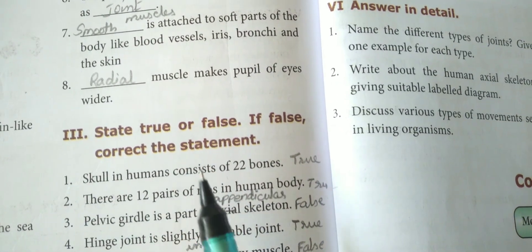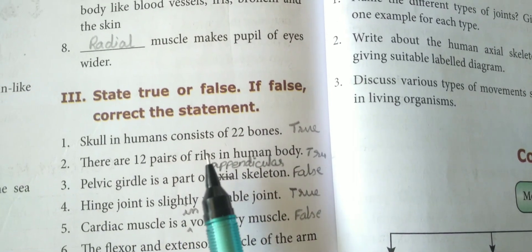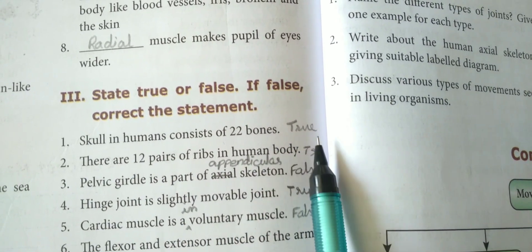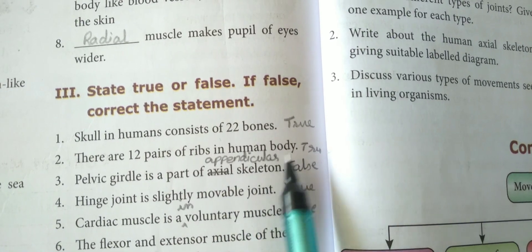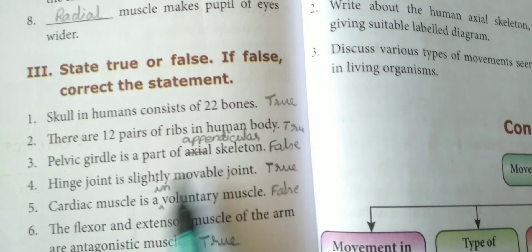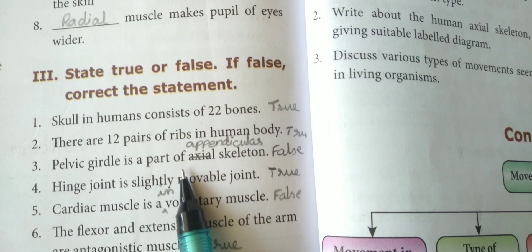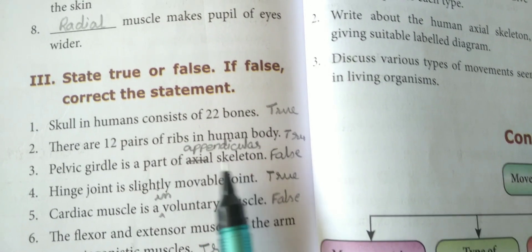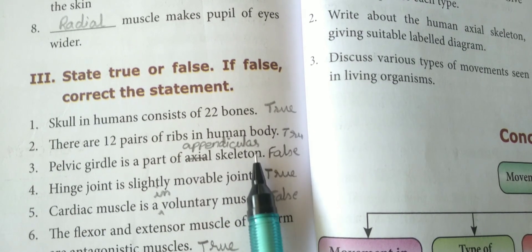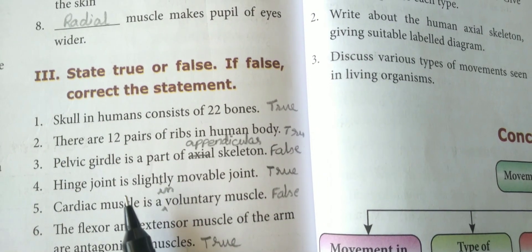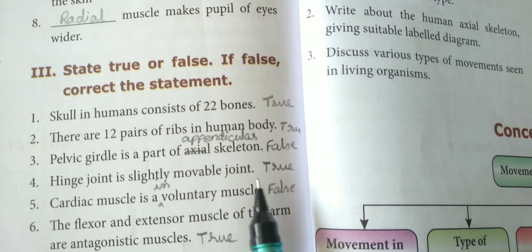State true or false. If false, correct the statement. Skull in humans consists of 22 bones — True. There are 12 pairs of ribs in the human body — that is also true. Pelvic girdle is a part of axial skeleton — that is false; it is part of the appendicular skeleton. Hinge joint is a slightly movable joint — True.